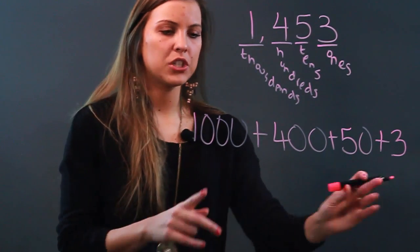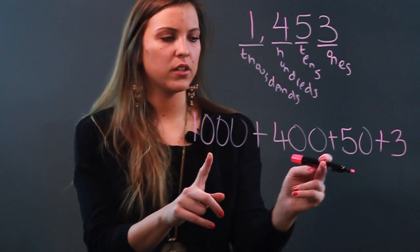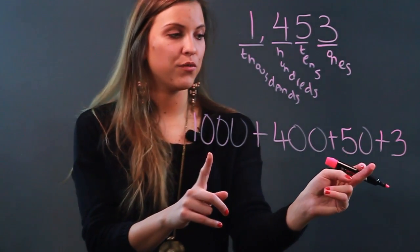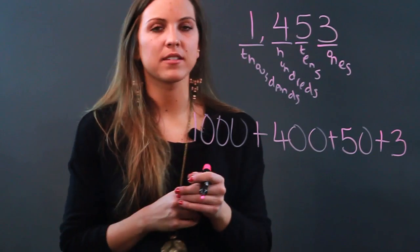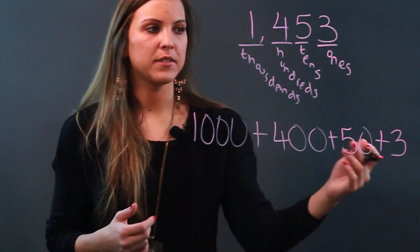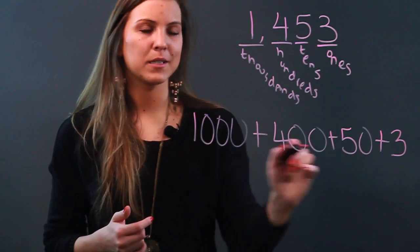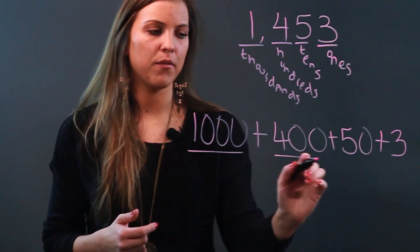And if you go ahead and check this, 1,000 plus 400 is 1,400, plus 50 is 1,450, and plus 3 is 1,453. So what I've done is take this number and expanded it to show the value of each of the digits.